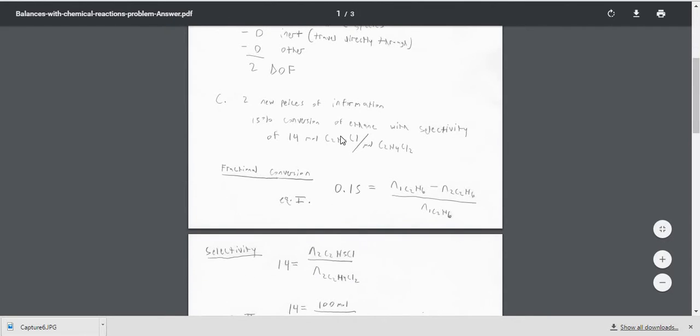Let's convert those two pieces of information directly into equations that we can use. The fractional conversion, we're going to call that equation one, is 0.15, so the 15%. And that's how much ethane goes in minus how much ethane comes out divided by how much ethane comes in. So that's your fractional conversion.